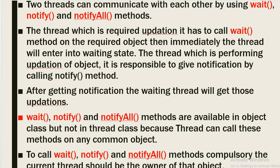Two threads can communicate with each other using the wait, notify, and notifyAll methods. The thread which requires an update has to call the wait method on the required object — immediately the thread enters the waiting state. The thread which is performing the update is responsible for giving notification by calling the notify method, and after getting notification the waiting thread will receive those updates.